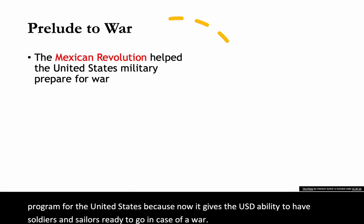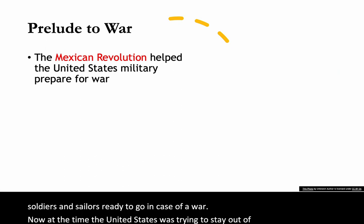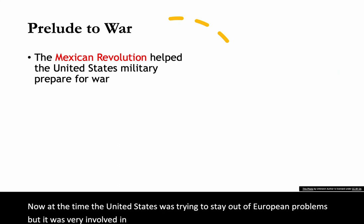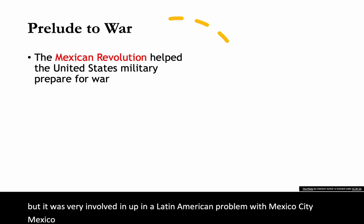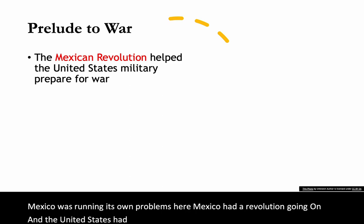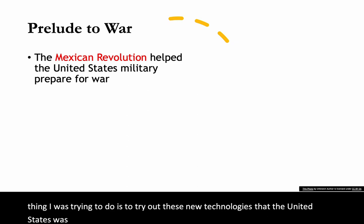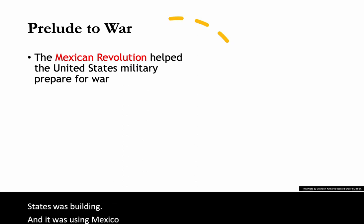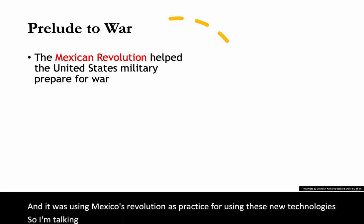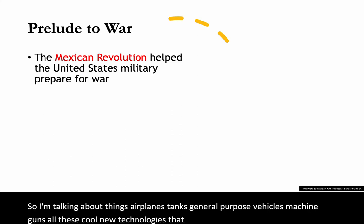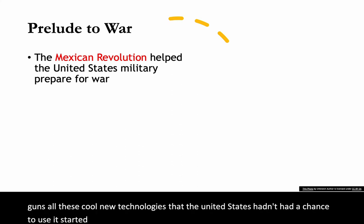At the time, the United States was trying to stay out of European problems, but it was very involved in a Latin American problem with Mexico. Mexico had a revolution going on, and the United States supported the revolution to a certain extent. One thing it was trying to do was test out new technologies it had been building, using Mexico's revolution as practice. These included things like airplanes, tanks, general purpose vehicles, and machine guns — all new technologies the United States hadn't had a chance to use before.